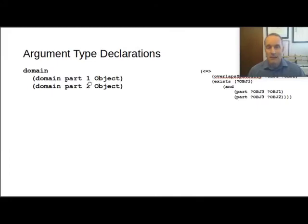So let's look at a couple more examples. There are other ways to define the types of arguments. In fact, there are four ways that I'm going to show you. So the most common is using this domain statement. And so we just saw how part, the two arguments, the first and the second argument of part, can be defined as an object.